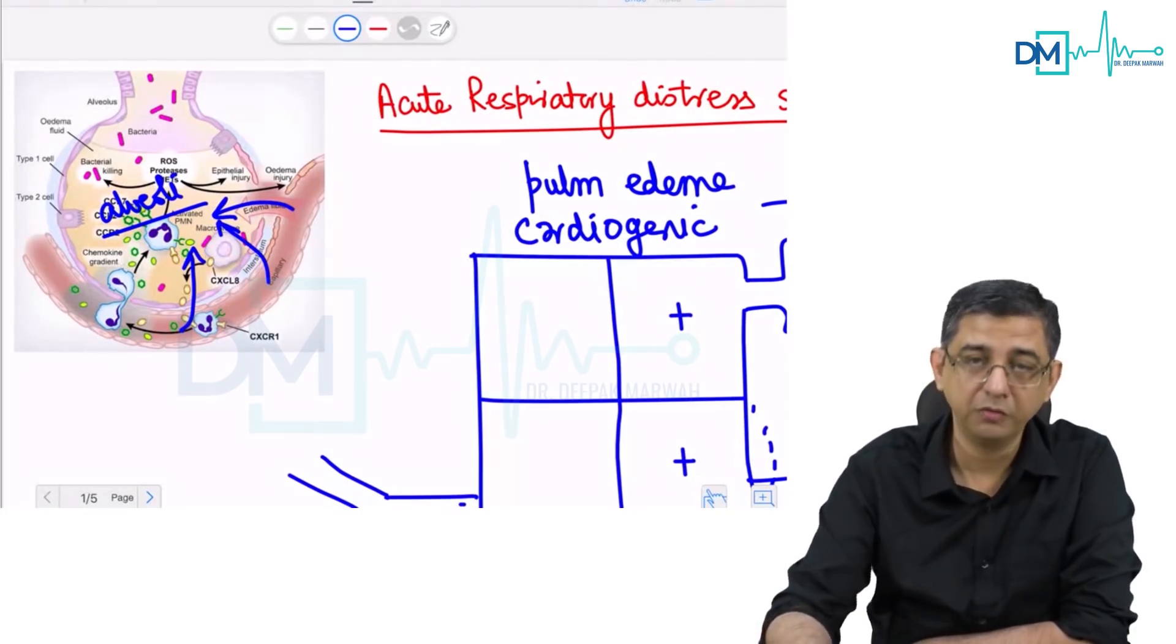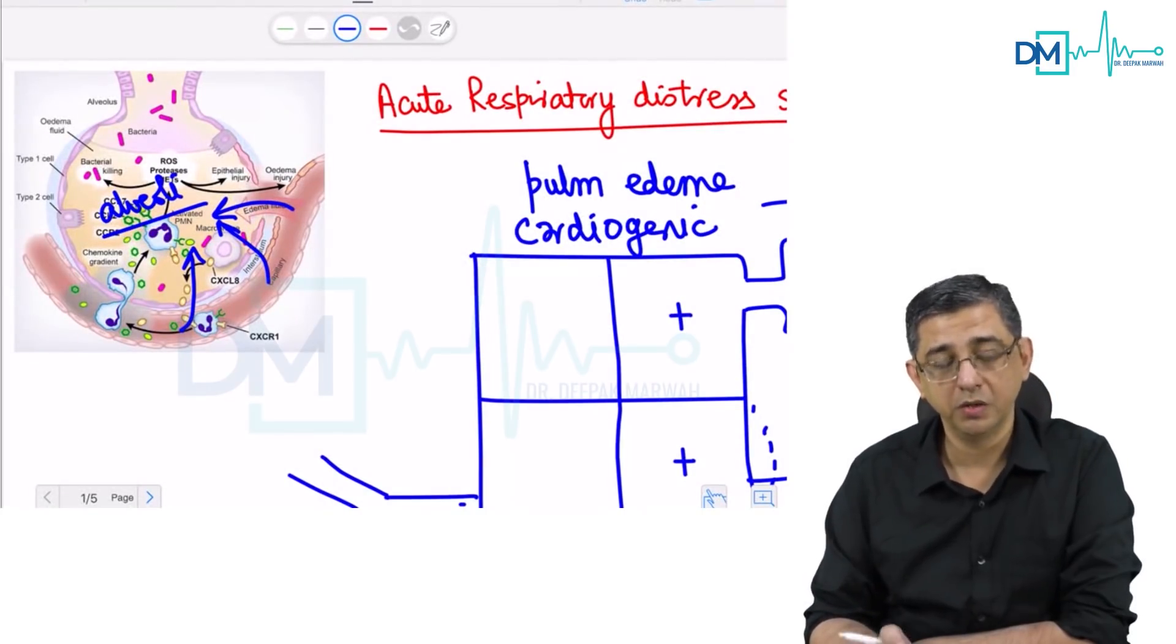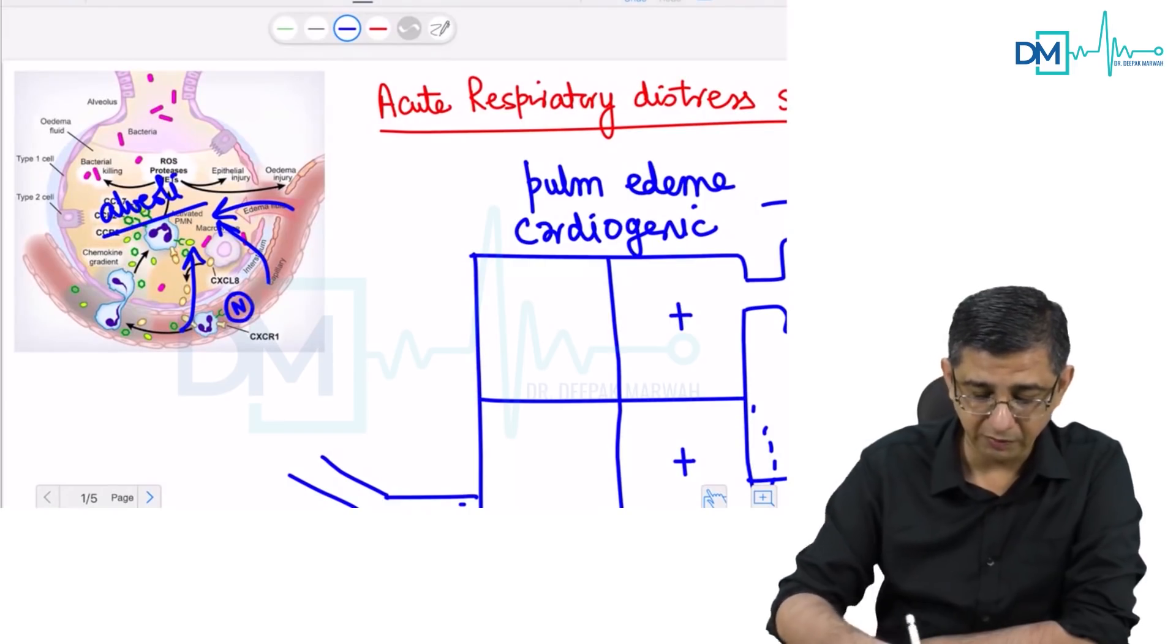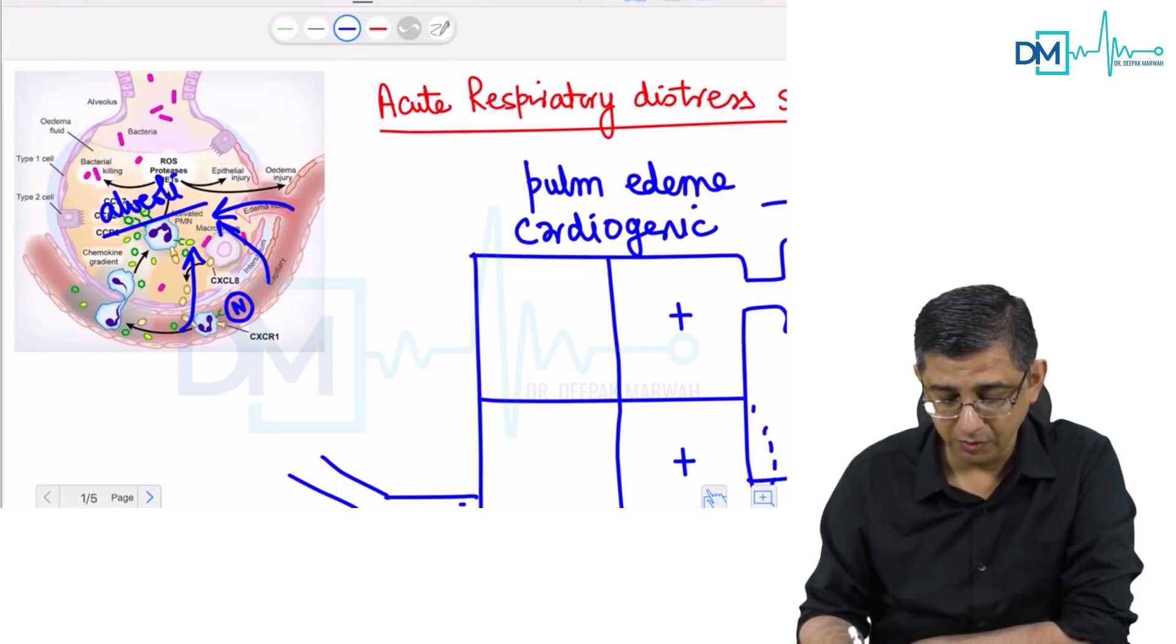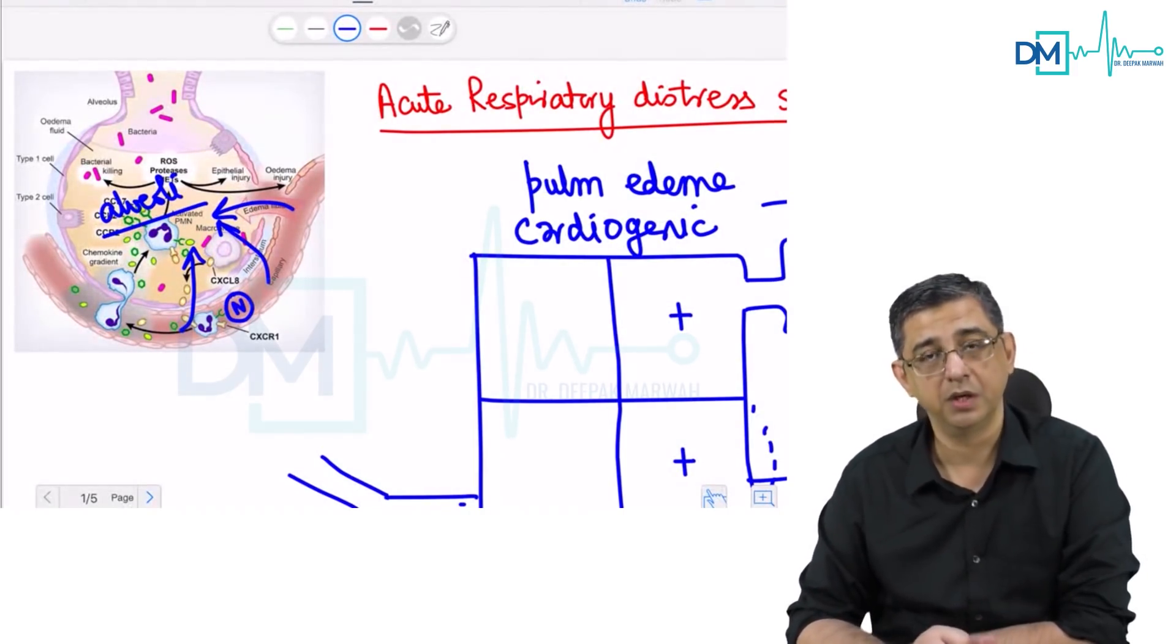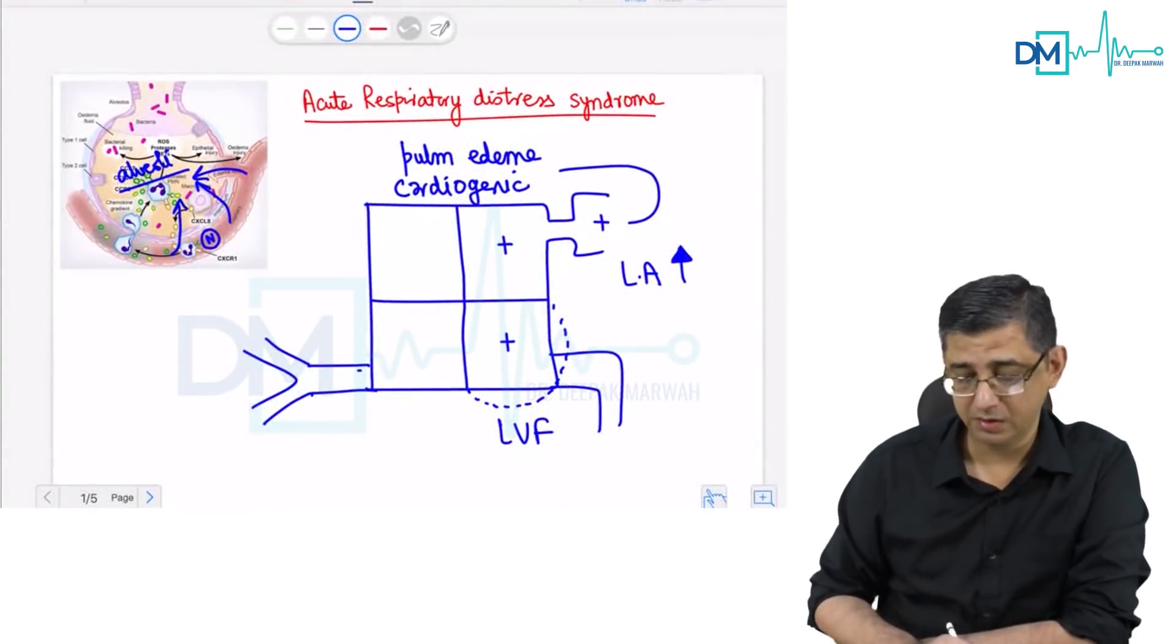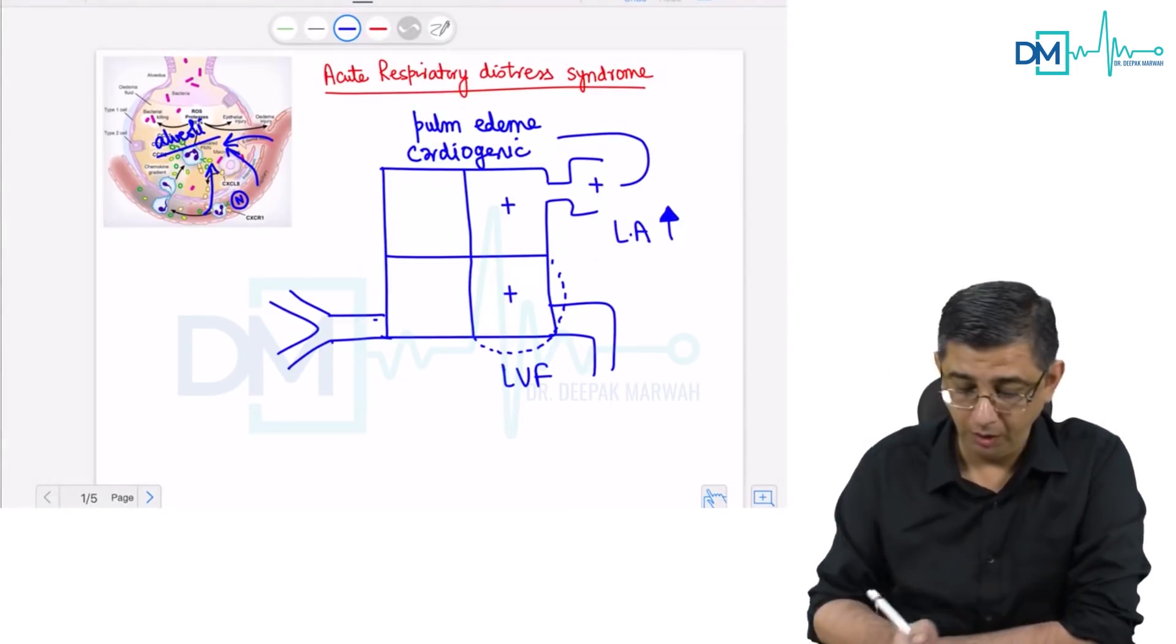that will cause transudation of fluid. But here I'm not saying that there is any transudation of fluid due to increase of hydrostatic pressure in the blood vessel. The pressure in this blood vessel which is surrounding the alveoli is perfectly normal, but still because of damage to the gap junctions which are present between the cells, because of the integrity of the endothelial cells getting impacted, there is a pulmonary edema developing in a patient. I would like to call this non-cardiogenic pulmonary edema. So the highlight of ARDS is that it is an example of a non-cardiogenic pulmonary edema. This